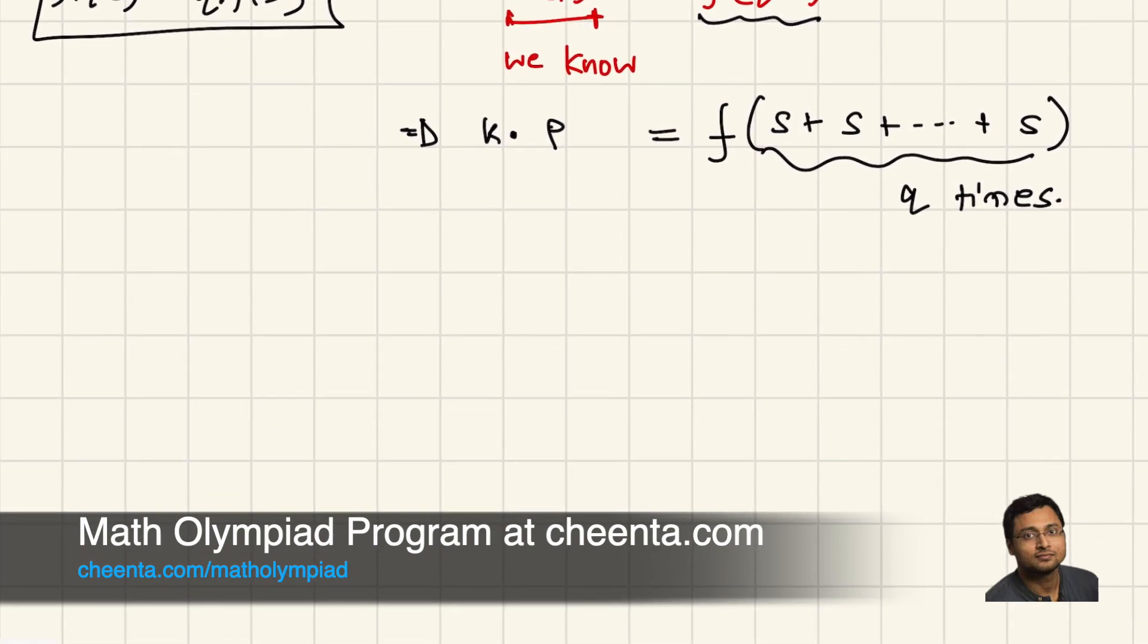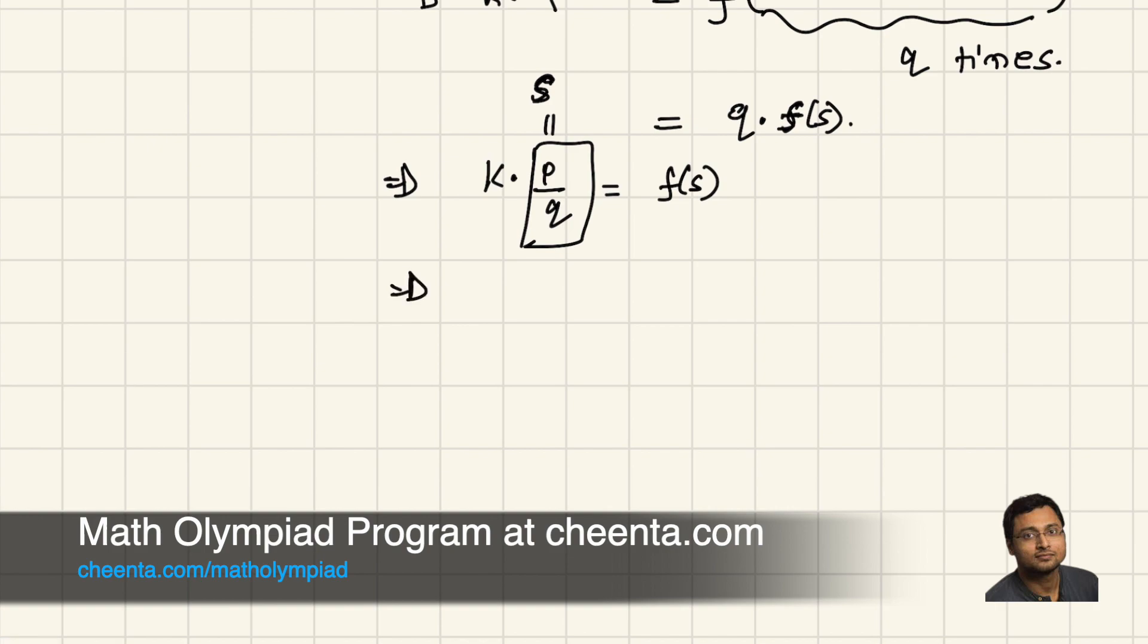So, let's write it here. This is f(Q times S). So this is Q times f(S). Okay. So, let's bring this Q downstairs. So k times P over Q is equals to f(S). We know that P over Q is itself S. That was the definition.